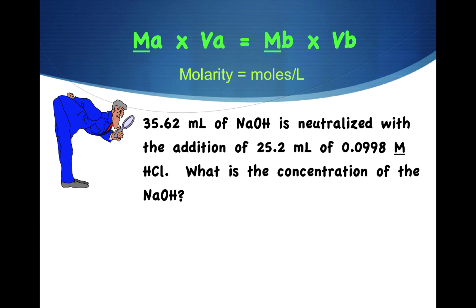So let's consider this problem. 35.62 milliliters of sodium hydroxide is neutralized with the addition of 25.2 milliliters of 0.0998 molar HCl. What's the concentration of sodium hydroxide? We're just going to plug those numbers into our formula.